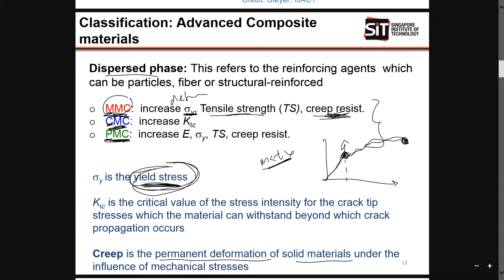So for MMC, its purpose is to prevent deformations, or to have good tensile strength and prevent creep. For CMC — your ceramic — it is to increase your critical value for stress intensity. This is the toughness value, which is how much the material can withstand before crack propagation occurs — after a crack propagates, whether can it hold until it breaks, and how much crack can it take before it can no longer be used.